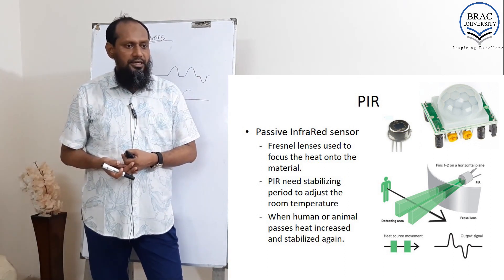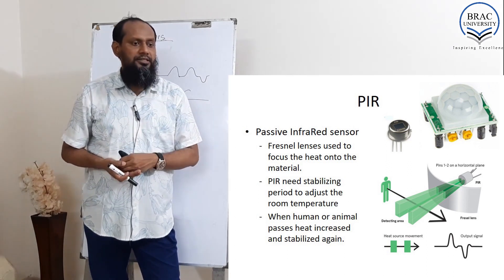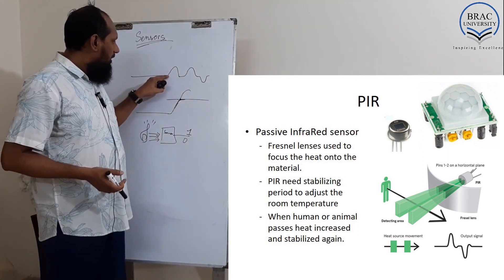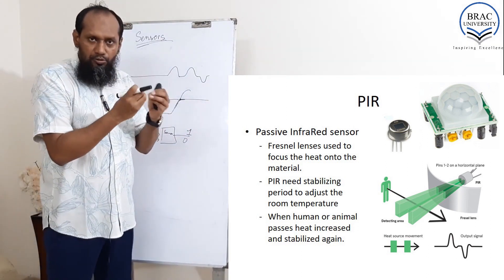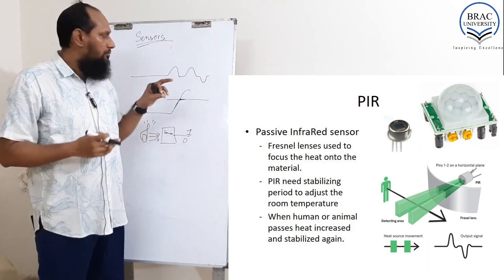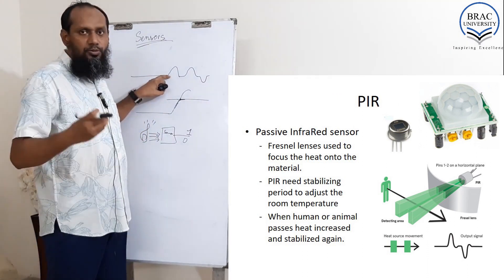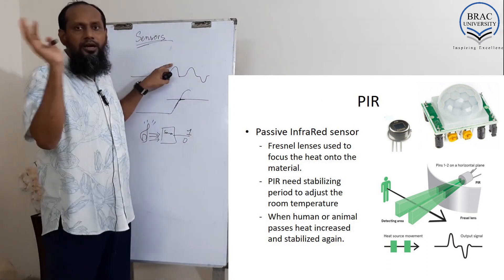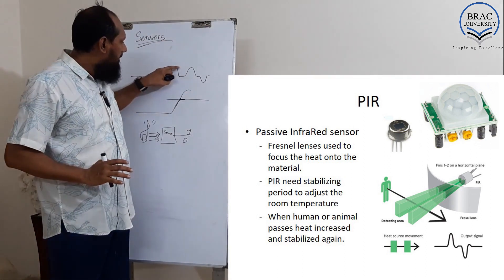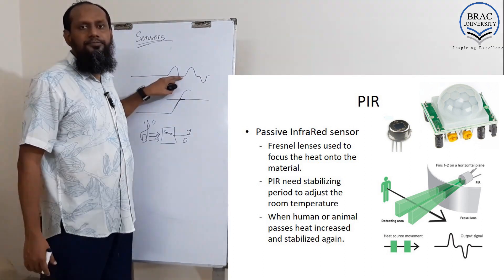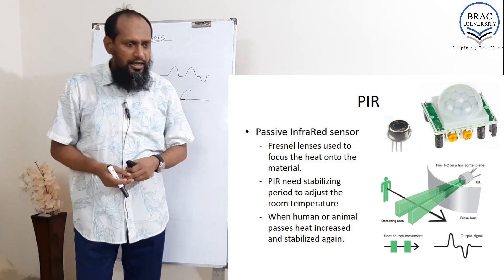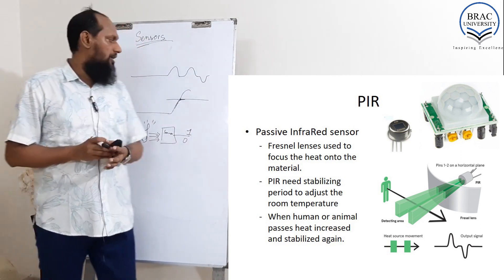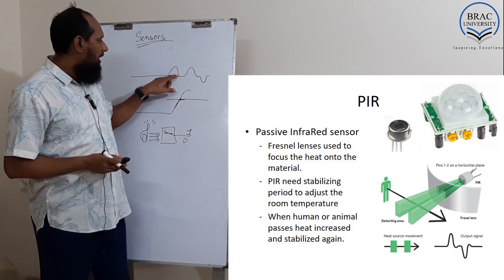The PIR needs a stabilizing period to adjust to the room temperature. When first placed inside the room, it needs some time to get stabilized. When first turned on, it may detect some heat in the room, go up, and take some time to adjust. When a human or animal passes by, the voltage increases and then stabilizes again.